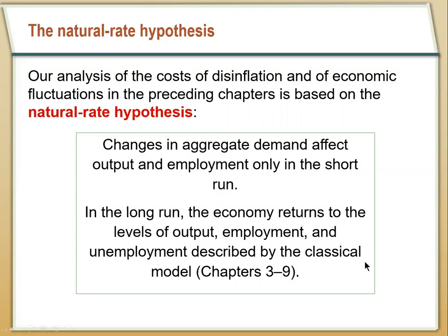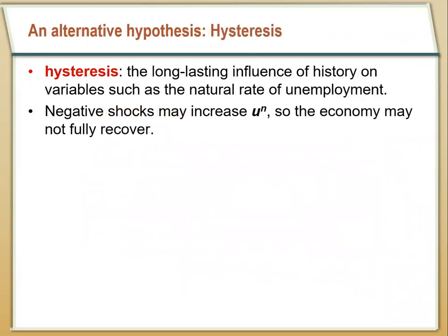The idea that the natural rate of unemployment can move is called hysteresis — the notion that shocks to variables in the economy can have lasting impacts on long-run variables. If we have a negative shock and unemployment is high for a really long time, it's possible that it pulls the natural rate of unemployment up. Similarly, if GDP is below potential for a really long time, it's possible that will decrease the long-run aggregate supply curve.